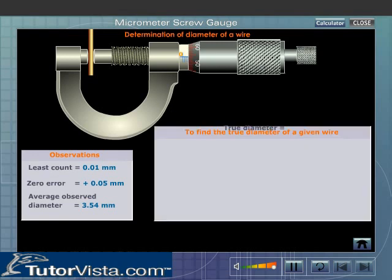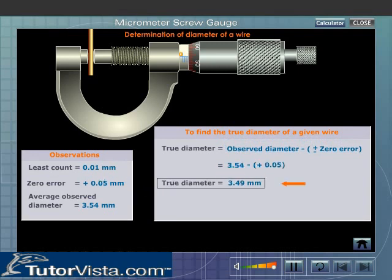After this, diameter of the wire is equal to 3.49 mm.